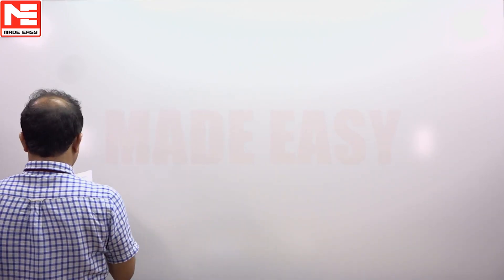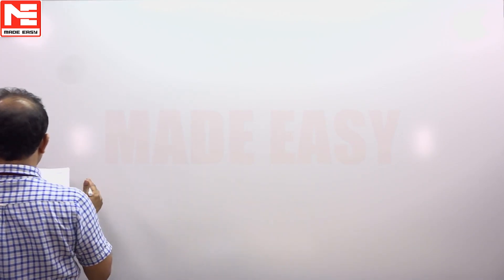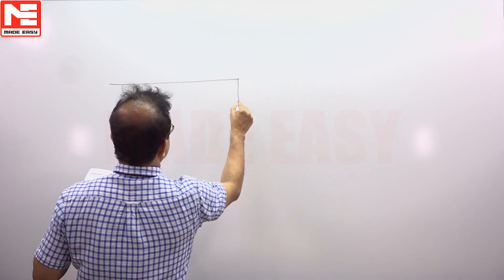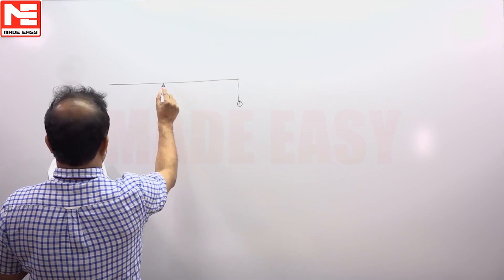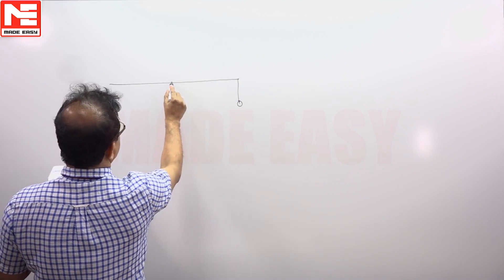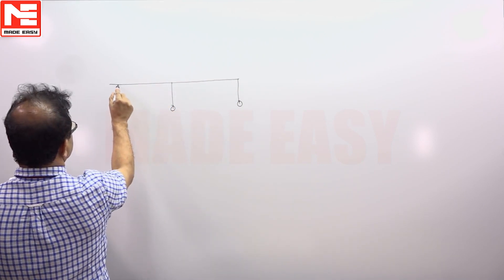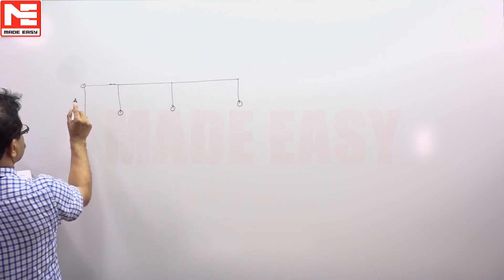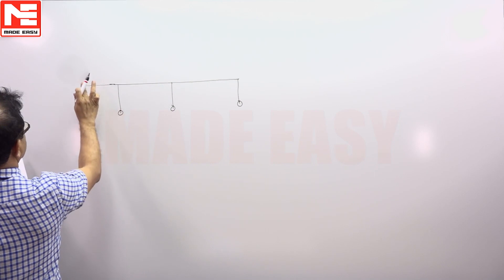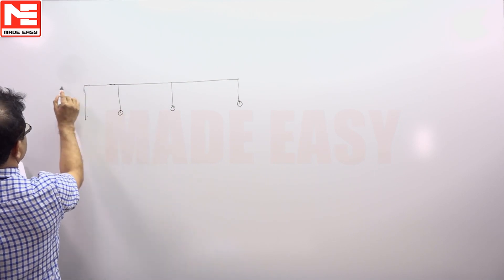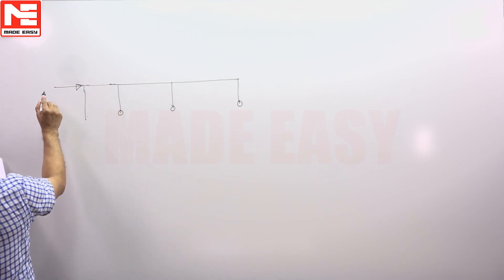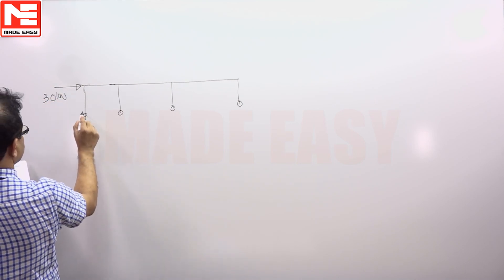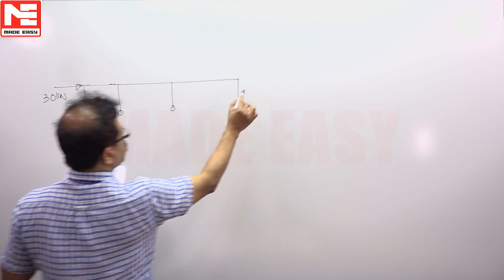The column shear as per portal frame method in the exterior column, we can take the free body diagram like this. Your load is 30 kilonewtons, height is 3 meters.